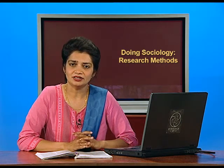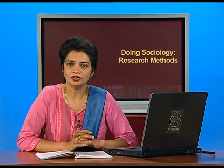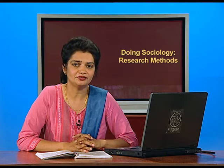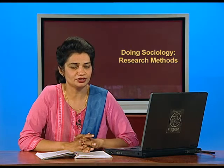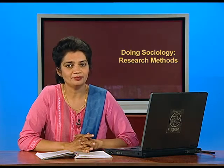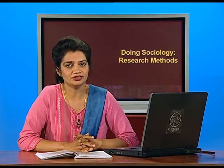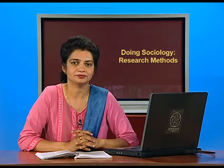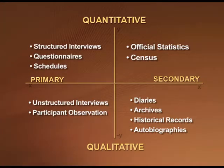Before we start that discussion, you can recall this diagram where we have classified various methods as primary quantitative, primary qualitative, secondary quantitative, and secondary qualitative. If you look at this diagram, we had placed different types of research methods within these quadrants, plotting them on primary and secondary, quantitative and qualitative. Now let us look at the advantages and disadvantages of various types of methods.